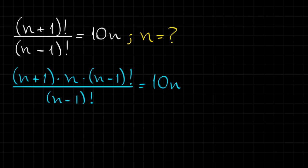Now, you can see that I can simplify this (n-1) factorial with this (n-1) factorial, right? They are the same number.